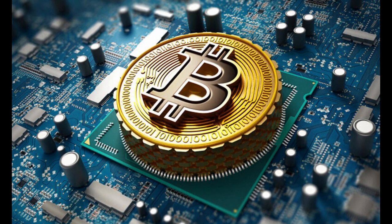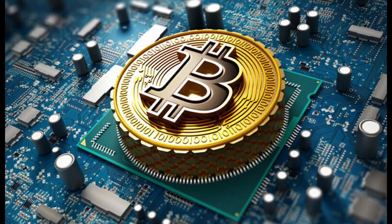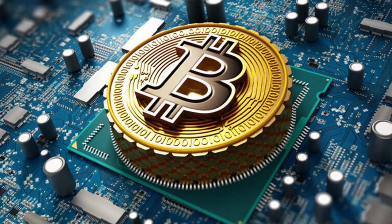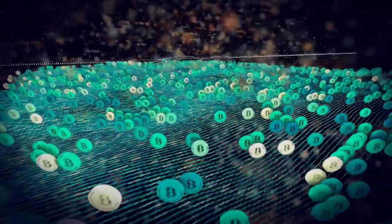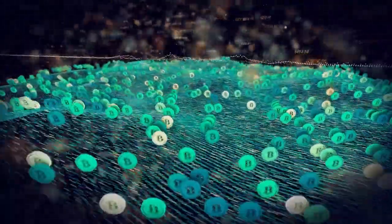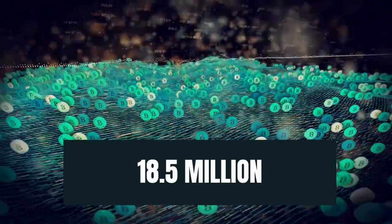On January 3rd, 2009, Nakamoto mined the first block of the Bitcoin network known as the Genesis block, thus launching the world's first cryptocurrency. Over the course of the next 20 years, a total of 21 million coins will be released, and to date about 18.5 million have been mined.